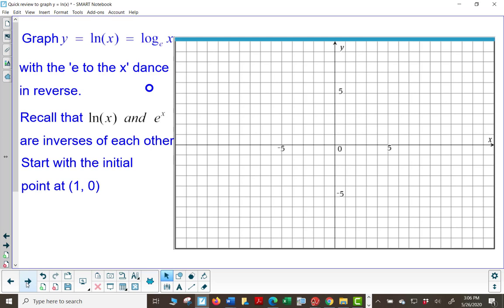We'll start with the initial point at 1, 0, because the natural log of 1 is 0, which is equivalent to saying e to the 0 power is 1.